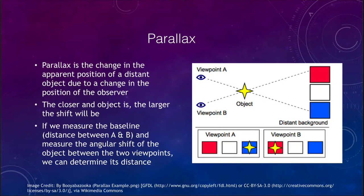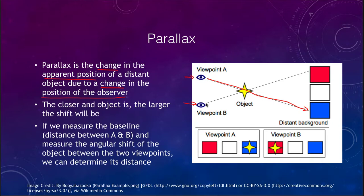What we really want to look at here is parallax. Parallax is defined as the change in the apparent position of a distant object due to a change in the position of the observer. When you look at something from two different points of view — from viewpoint A, a nearby object appears to be in front of the blue square; if you move to viewpoint B, that same object now appears to be in front of the red square. The nearby object has apparently moved.